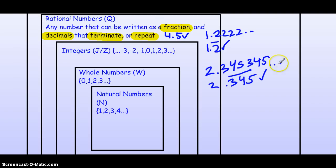So, rational numbers, again, are fractions or decimals that terminate or repeat.